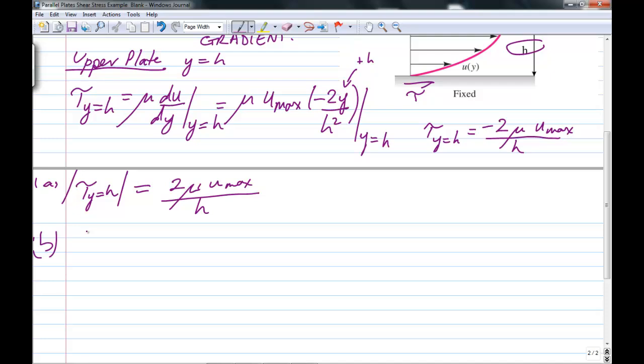Okay, so now we consider the lower plate. So we're considering y equals minus h. And so tau at y equals minus h is going to equal mu du dy at y equals minus h.